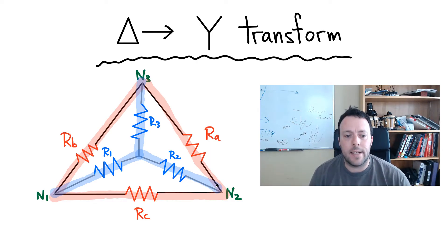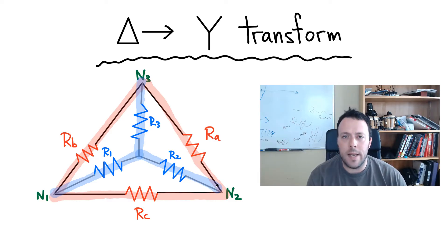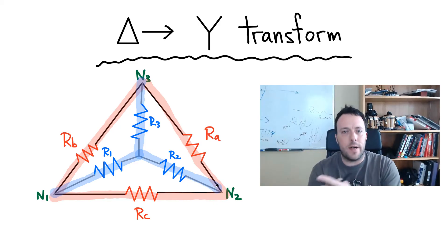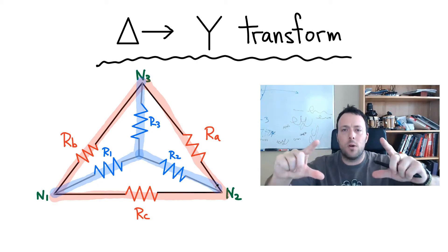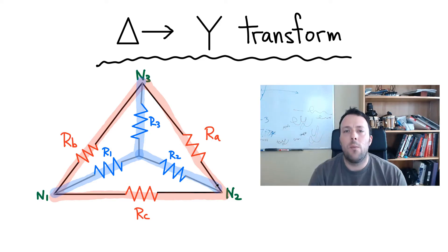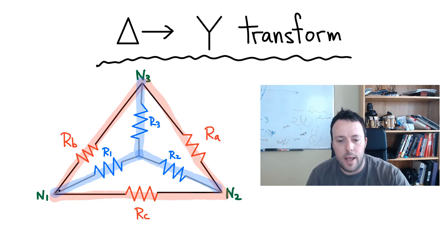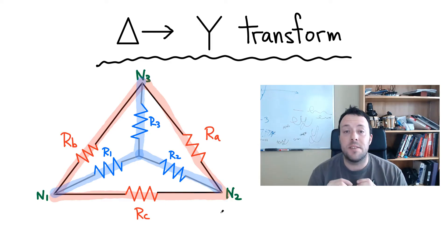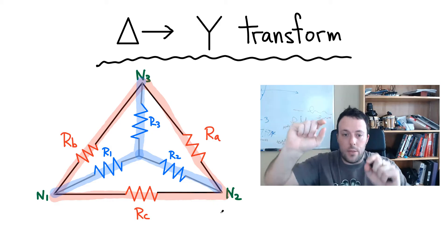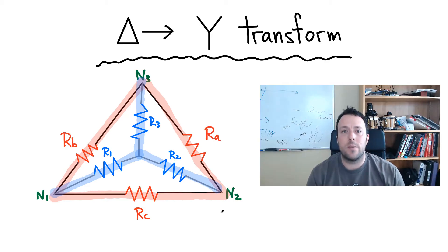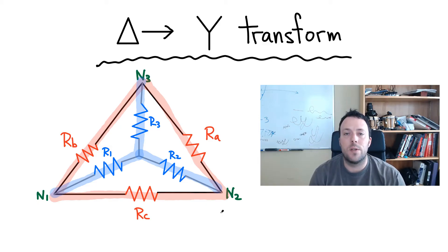There is a way of relating the three resistors in the Y network to the delta network, and you can go vice versa as well. What we want to do is start with the delta network — we know those resistors from the bridge — and rewrite this in terms of a Y network. The reason this works is because the equivalent resistance between nodes N1 and N2 is going to be the same value whether you use the Y network or the delta network. So although you've changed the topology, you still get the same equivalent resistance between any two nodes.